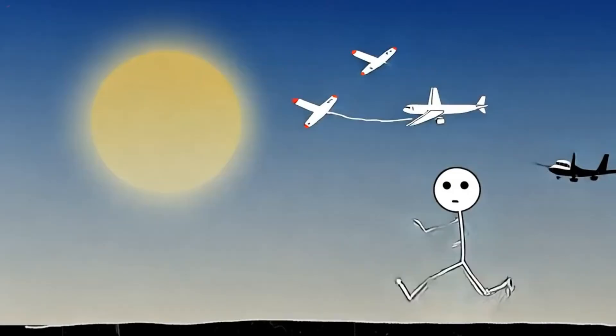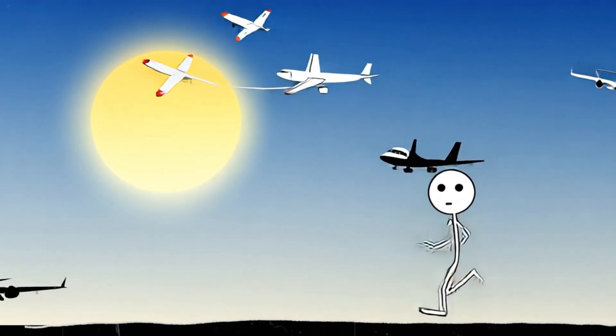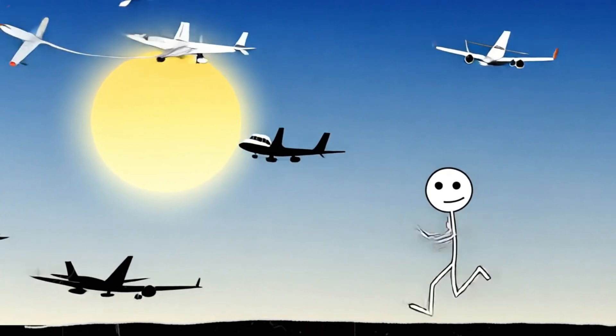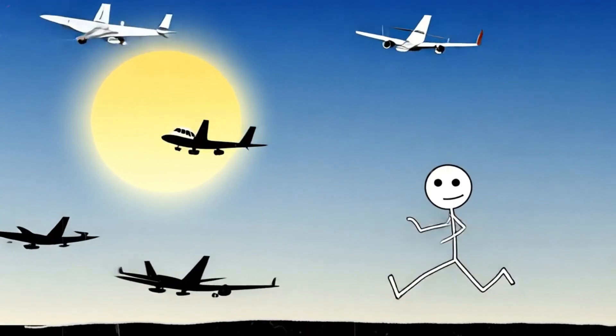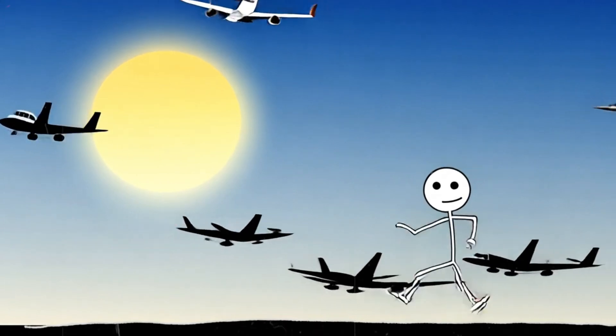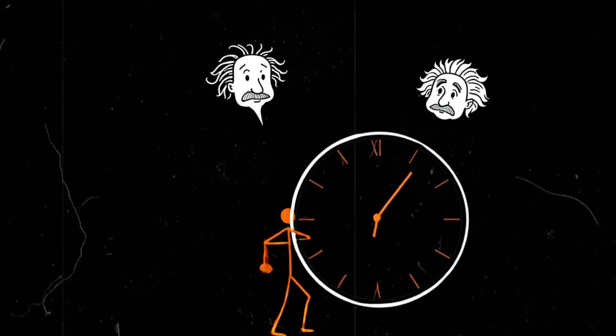But if you run westward, against Earth's rotation, things get weird. You're now running toward the past, at least from an observational standpoint. If you were fast enough, you'd see the sun rise in reverse. Birds would flap backward. Planes flying east would appear frozen in place. But can you actually go back in time?